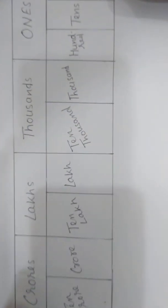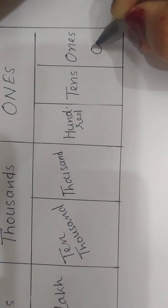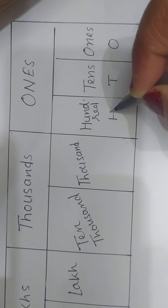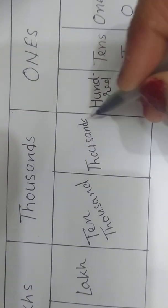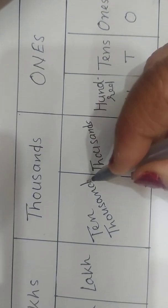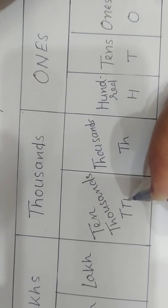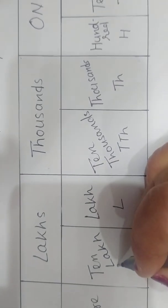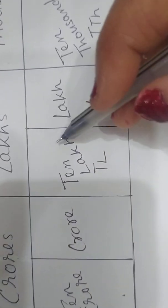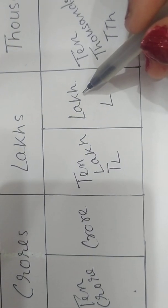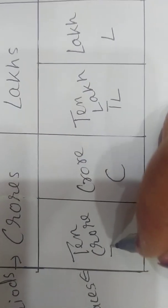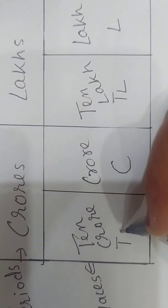The short form of ones is O, tens is T, hundreds is H, thousands is TH, and ten thousands is TTH. Lakhs is L and ten lakhs is TL. For crores we use the short form C, and ten crores is TC.